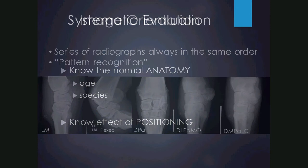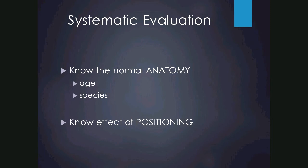Part of systematic evaluation is knowing the normal anatomy. There will be some variations with age — in a skeletally immature patient the physis will be open and secondary centres of ossification may not be fused yet. Some species have differences; for example, cats always have a clavicle which is not present in the dog. It's also important to know the effect of positioning — gas will move dorsally and fluid will move ventrally, so certain organs may be highlighted versus others.